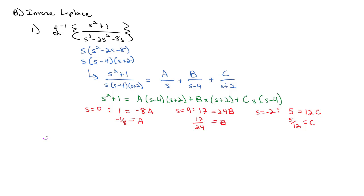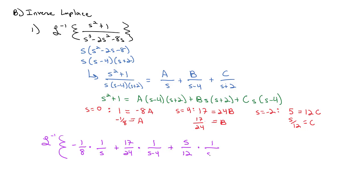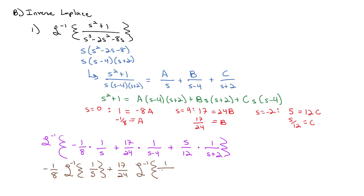Now we find the inverse Laplace transform. With Laplace transforms we pull the constant out in front. So we have negative 1/8 times (1 over s) plus 17/24 times (1 over s minus 4) plus 5/12 times (1 over s plus 2). This gives us negative 1/8 times the inverse Laplace transform of 1/s, plus 17/24 times the inverse Laplace transform of 1/(s minus 4), plus 5/12 times the inverse Laplace transform of 1/(s plus 2).